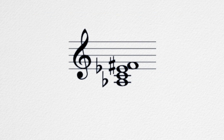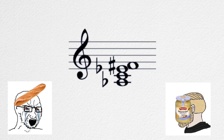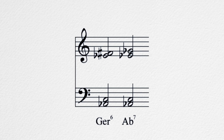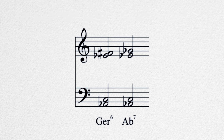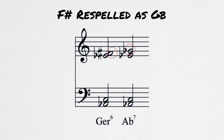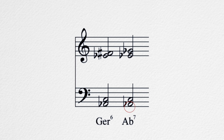The German augmented sixth also has some unique properties. It is actually enharmonically equivalent to a dominant seventh chord — it sounds the same but is written differently. In C major it is A flat, C, E flat, F sharp; if that F sharp is re-spelled to G flat, we get A flat, C, E flat, G flat, which is just an A flat seven chord.